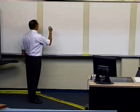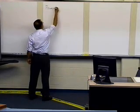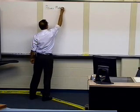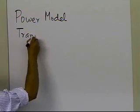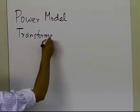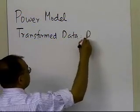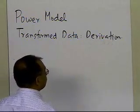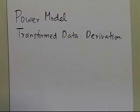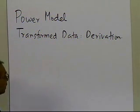In this segment, we're going to talk about the power model regression. We're going to talk about transformed data derivation. We're going to take certain data points and regress them to a power model, but the derivation would be through transformed data. What we mean by transformed data will be evident as we go through the process.